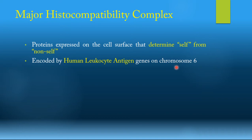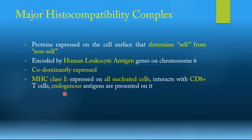MHC molecules show co-dominance, so both the paternal and maternal genes are expressed. There are multiple classes of MHC: class 1, 2, and 3. Classes 1 and 2 are responsible for the self versus non-self and the antigen-presenting functions, while MHC class 3 is more responsible for functions in the complement system and will not be discussed in this video.